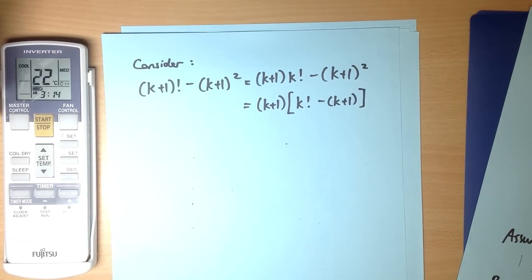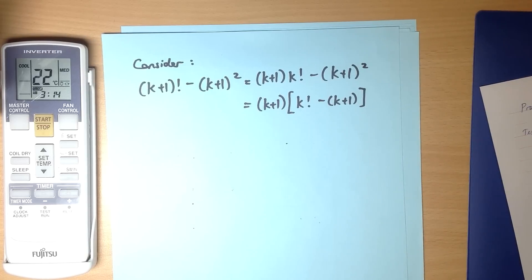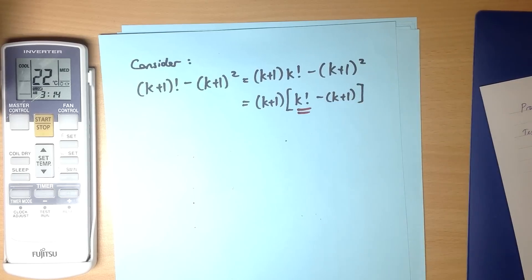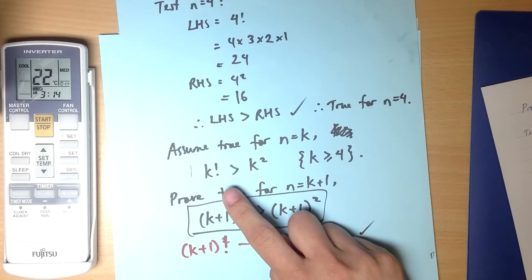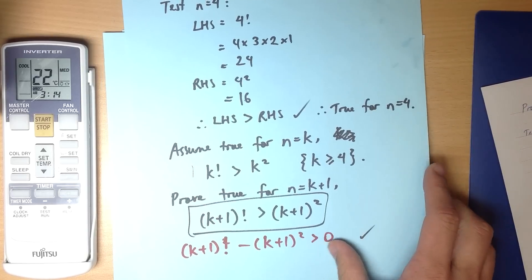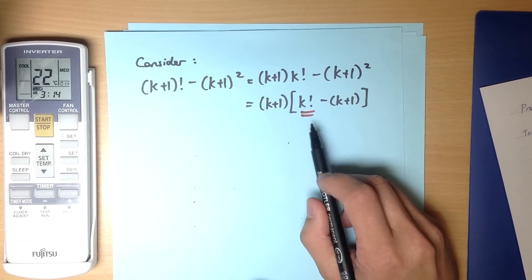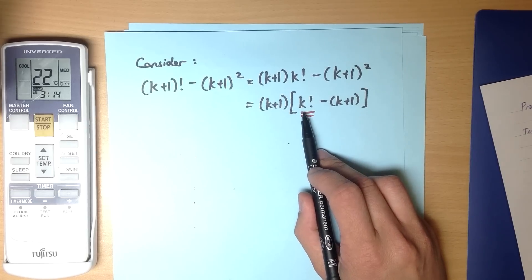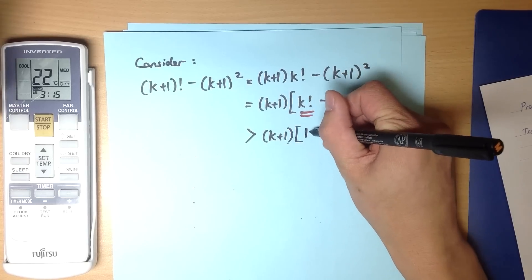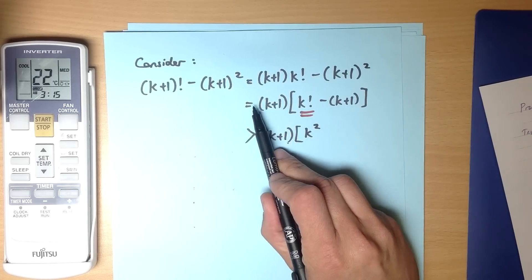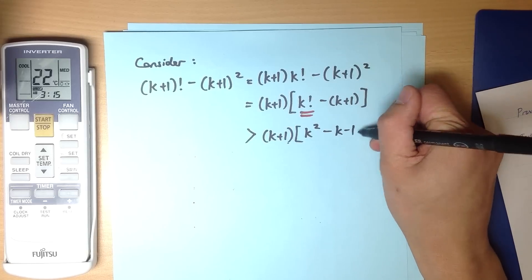Now this is crucially important here that I factorized this out because now you can see that what I've got in here, this k factorial, appeared in my assumption. I'm going to use my assumption, which was that k factorial is bigger than k squared, and I'm going to sub it out here. So I'm assuming that this is bigger than k squared, so that means this statement is now true. That k factorial, I'm going to put in for a k squared and the equality sign here, I'm going to change for an inequality sign. Now I'm going to expand this, that's minus k minus 1.